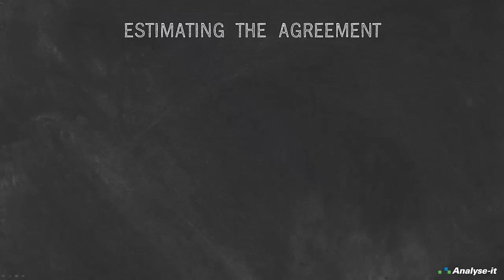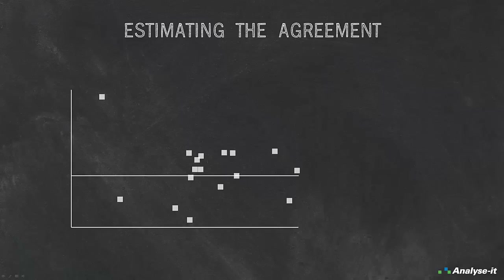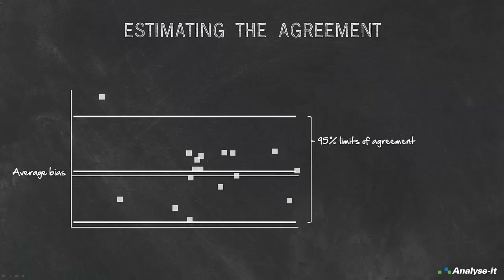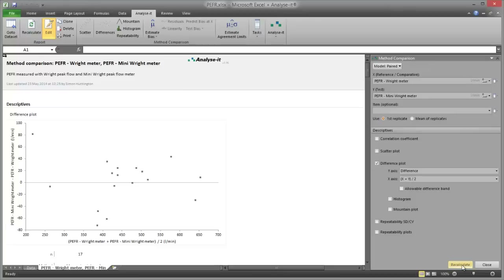Estimating the agreement: if the differences are not related to magnitude, the mean of the differences provides an estimate of the average bias between the methods. The limits of agreement estimate the interval that a given proportion of differences between measurements is likely to lie within. The limits can be used to determine if the methods can be used interchangeably or if a new method can replace an old method. To estimate the limits of agreement,